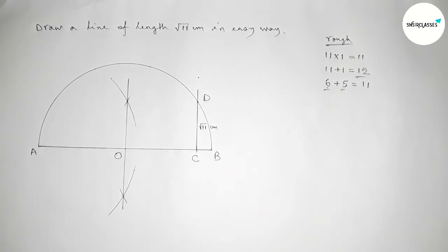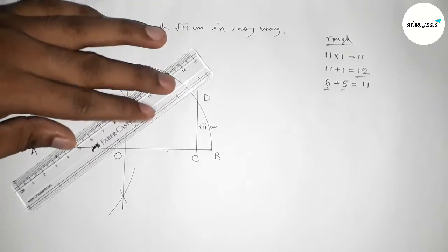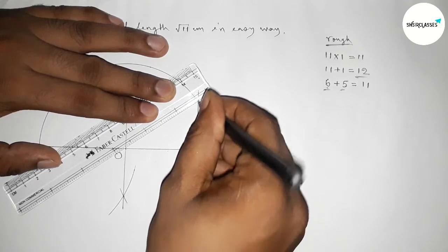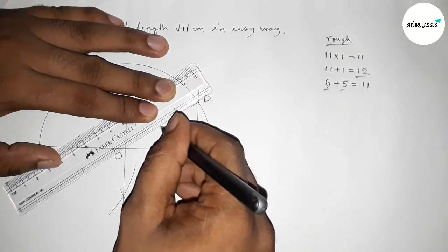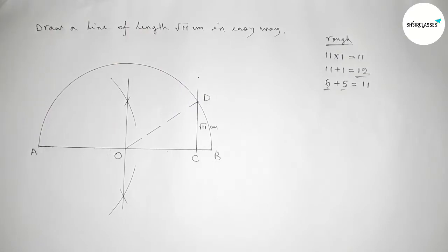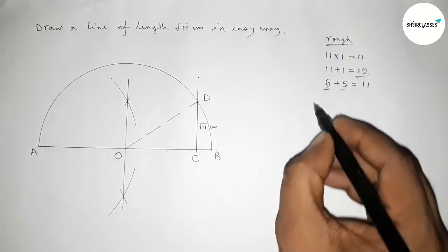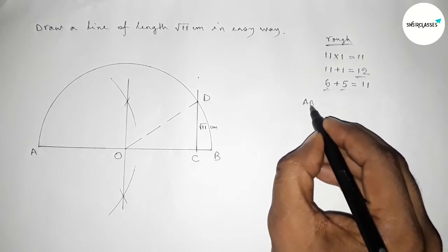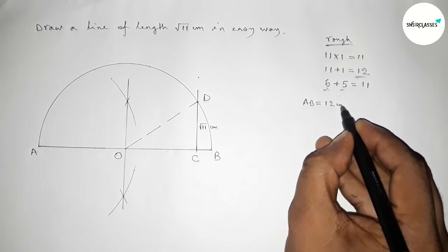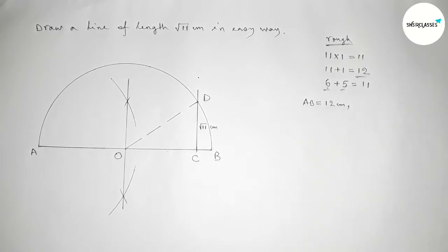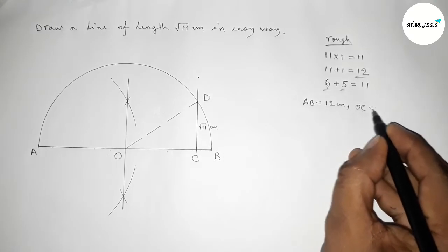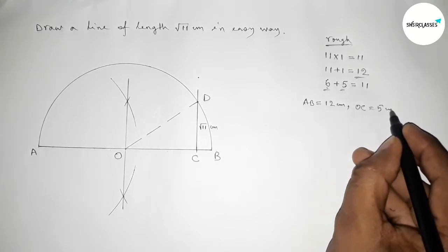From this, the length CD equals to root 11 centimeter. Now I am going to prove that the length CD equals to root 11 centimeter. First we have to join O and D. The given length AB equals to 12 centimeter and the length OC equals to 5 centimeter.